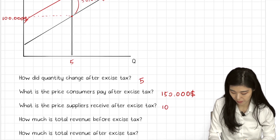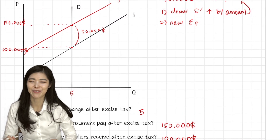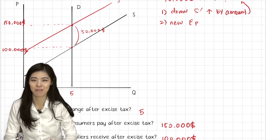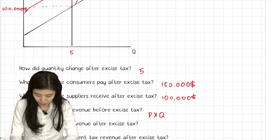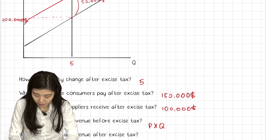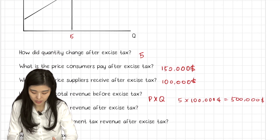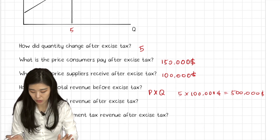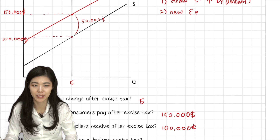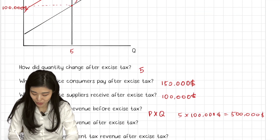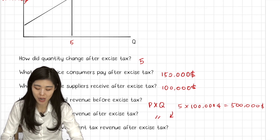How much is total revenue before excise tax? Remember total revenue — how do you calculate it? It's price times quantity. Before tax, it was five times $100,000, so $500,000 before. How much is the total revenue after excise tax? Price times quantity. The price that suppliers receive is the same, so the answer would still be the same. The total revenue will not change for the suppliers.